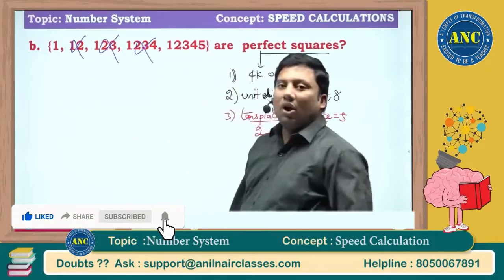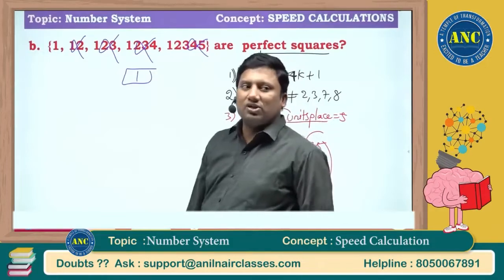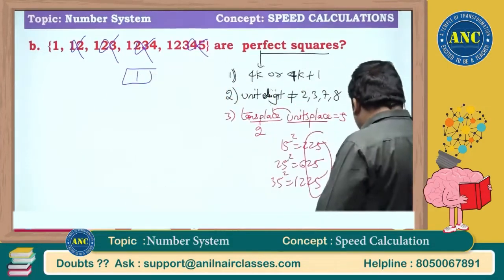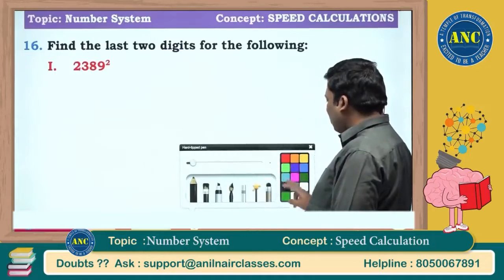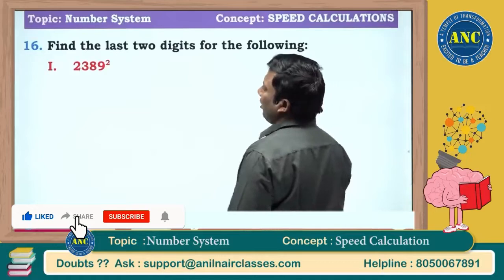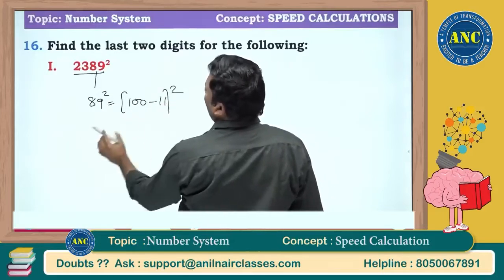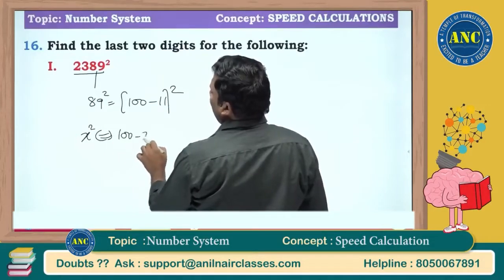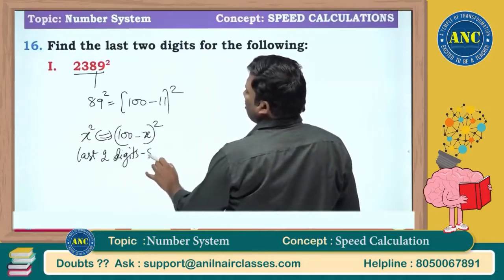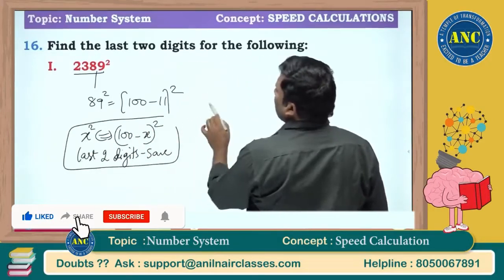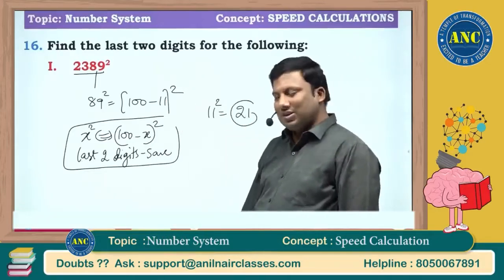A perfect square never ends with 2 or 3; it will always be of the form 4k or 4k+1; last two digits will be 25 if ending in 5. So how many elements in the set are perfect squares? Only one. This question uses the fundamentals of perfect squares. These are very easy exam model questions. Now we will solve: find the last two digits of 2389².